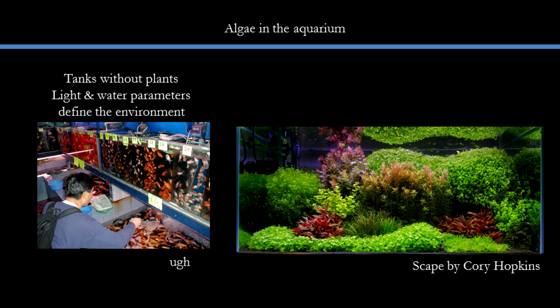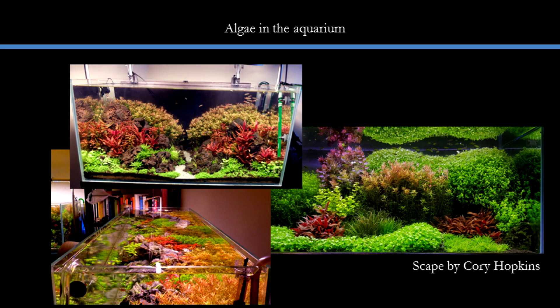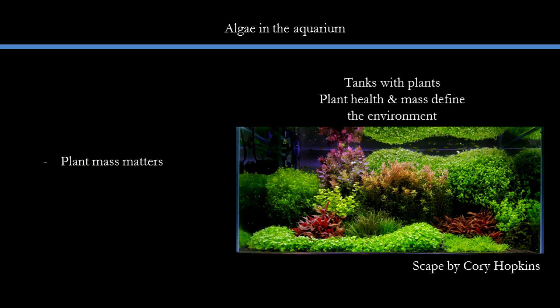In a non-planted tank, light and water parameters determine the outcome of algae. In a fully planted tank, plant mass and the health of plants determine whether you get algae or not. We can examine the tops of our plants, which are closest to the light under the strongest lighting levels — in many tanks it can be up to 400–500 PAR — and yet the tips are completely clean. This is because a fast-growing plant mass deters algae spores from settling in. If we extrapolate this effect to the entire tank, with fast-growing stem plants at every corner, there will be no space for algae to find a home.